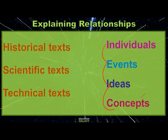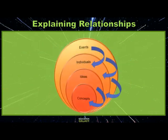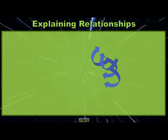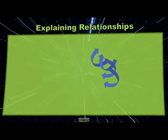We're going to talk about how individuals, events, ideas, and concepts are related. 'Concepts' is a big word for an idea; events are things that happen; and individuals are people. So we are going to look at how in historical, scientific, and technical texts these ideas are related.